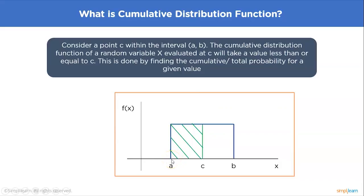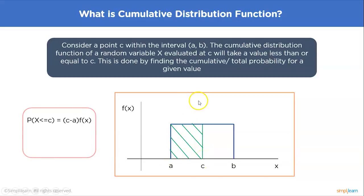If we find the area of the curve to the left-hand side of c — the entire area of this rectangle — we get the cumulative distribution function. For a rectangle, the area is length times breadth. The breadth of the rectangle is the distance between points a and c, which is c minus a. The height is the point at which it intercepts the probability density function on the y-axis.